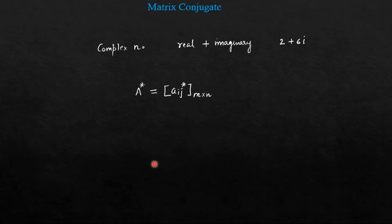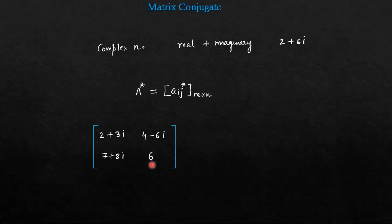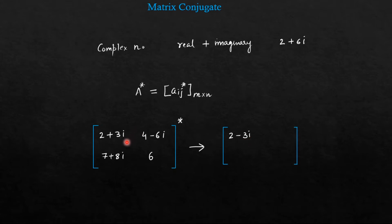Let me take an example. Suppose we have given a matrix whose elements are 2 plus 3 iota, 4 minus 6 iota, 7 plus 8 iota, and 6. The fourth element is real — it does not contain any imaginary part. Now if you take the conjugate, then you will get 2 minus 3 iota. While taking the conjugate, what we do is we just reverse the sign of the imaginary part.